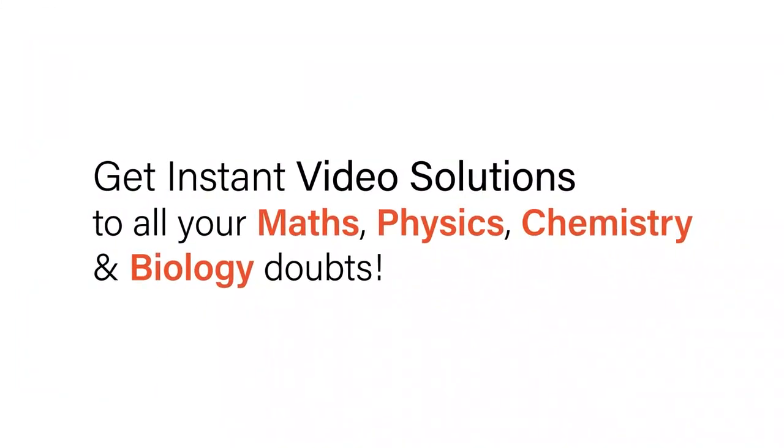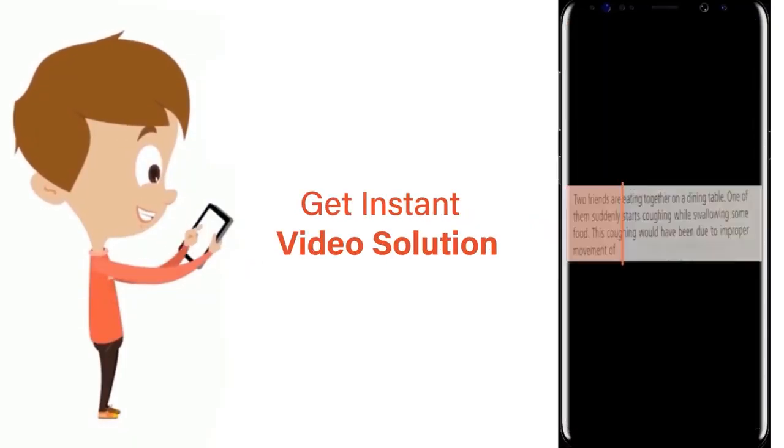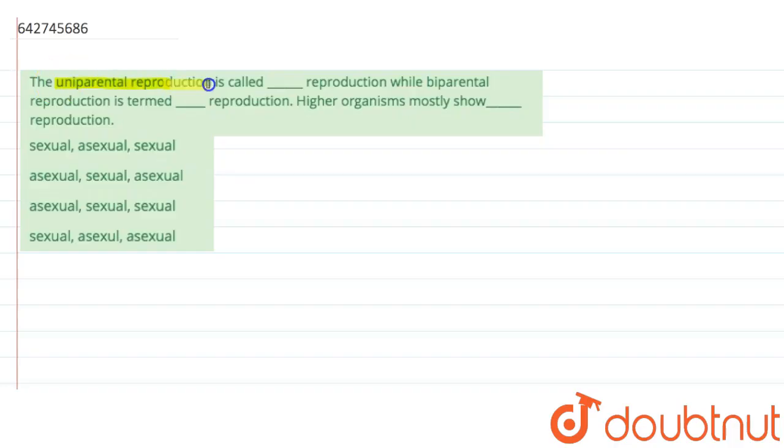With Doubtnet, get instant video solutions to all your maths, physics, chemistry and biology doubts. Just click the image of the question, crop the question and get instant video solution. Download Doubtnet app today. Question: The uniparental reproduction is called dash reproduction.